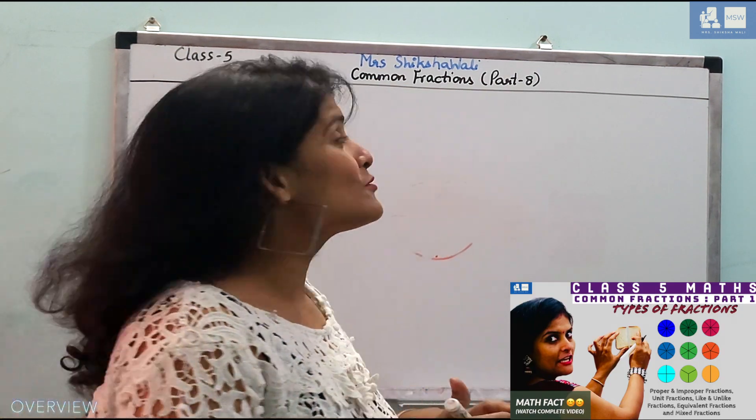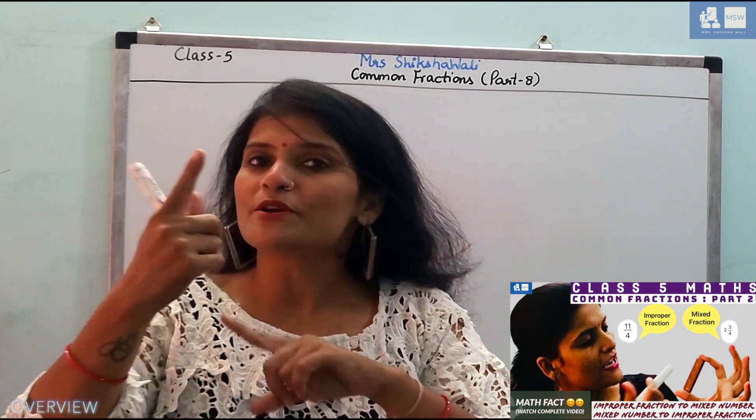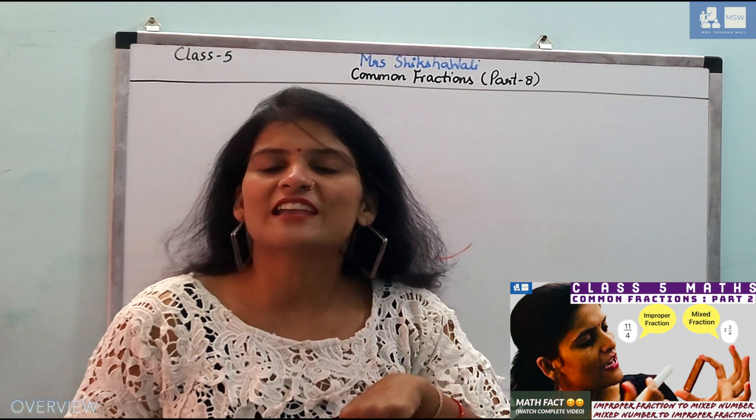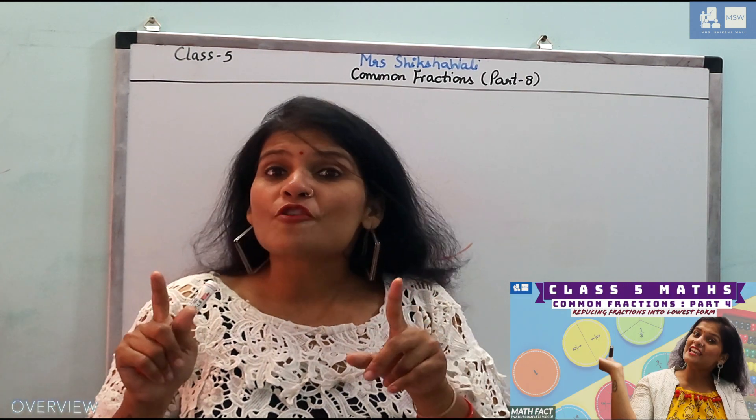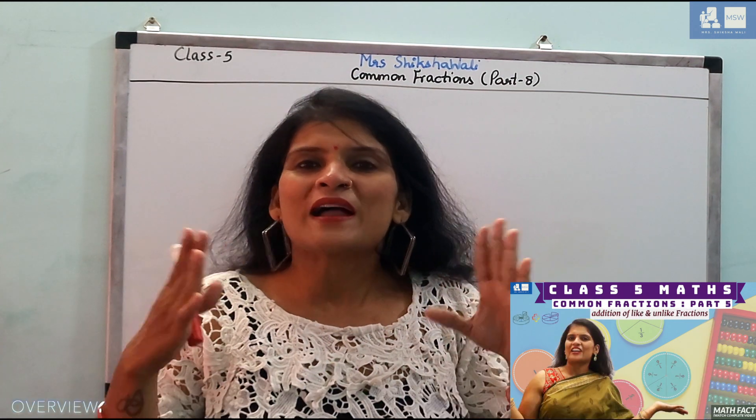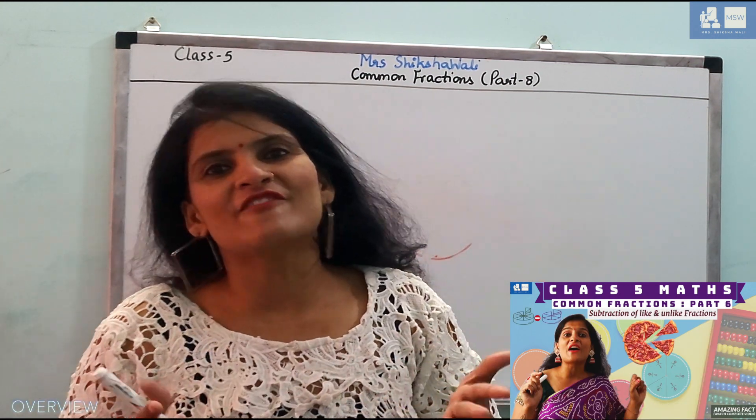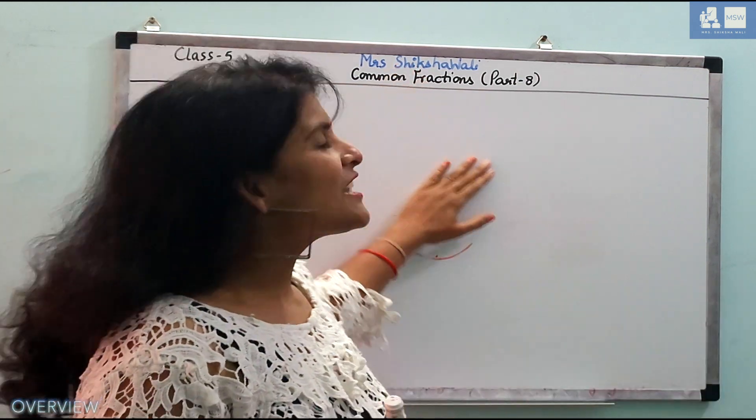In part 1, we have types of fractions. In part 2, we have improper to mix, mixed to improper conversion. In part 3, we have comparison of fractions. In part 4, we have lowest form. In part 5, we have addition. In part 6, we have fraction. In part 7, we have multiplication. In part 8, we have division of fractions.